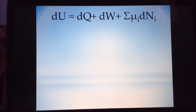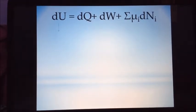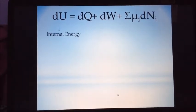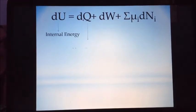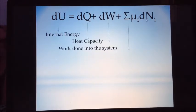To describe the thermodynamics of a rubber band mathematically, the equation du which is equal to dq plus dw plus the summation of mu i d ni is used, wherein u is the internal energy, q is the heat capacity, w is the work done into the system, mu i is the chemical potential, and ni is the number of moles involved in the system.